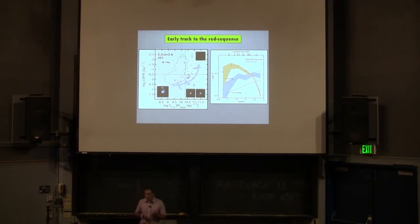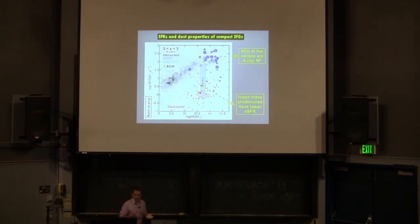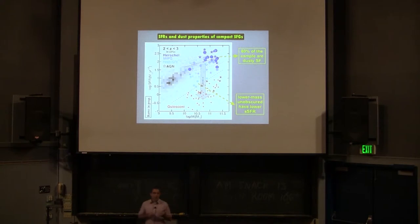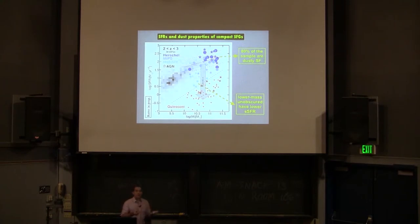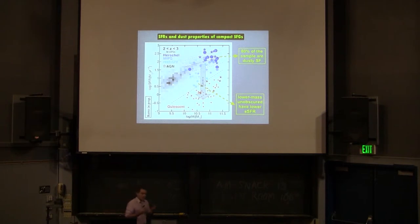In our first paper we only investigated number densities. So what we set out to do is draw a sample of these galaxies in one of our deepest fields and get the best possible information on star formation rate, dust obscuration, and stellar populations — to determine whether their quenching times, the time it takes to go from the main sequence to the quiescent dead sequence, are consistent with the picture derived from the number density evolution.